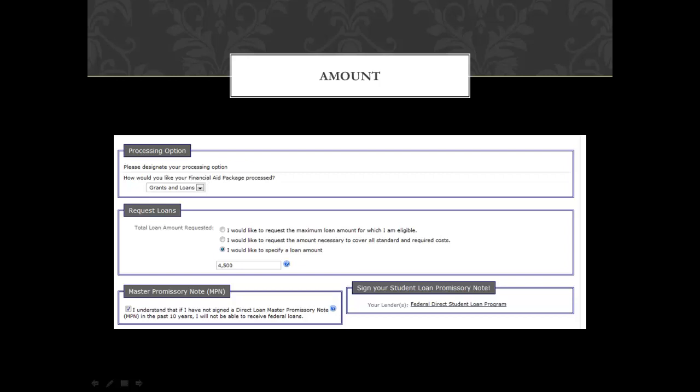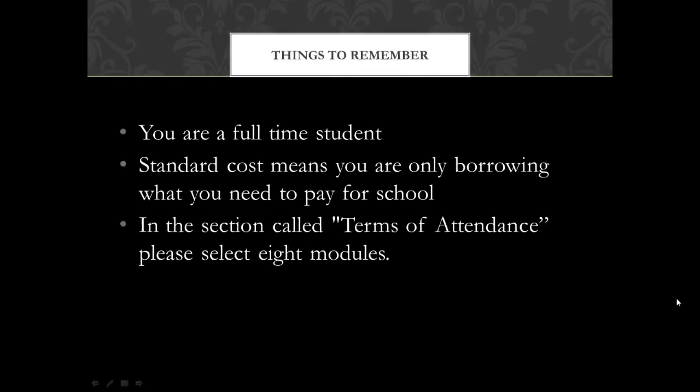For example, selecting $4,500 — because usually if you combine that with our average Pell grant, that's about what is needed per year in loans to cover your attendance. You'll notice the interview gives you the option to sign your promissory note again. I cannot stress how imperative it is to sign your MPN — not doing so will not give you your loans. If you have not signed your MPN, click on this link to go there, and then click on the tab saying that you understand that you have signed your MPN.